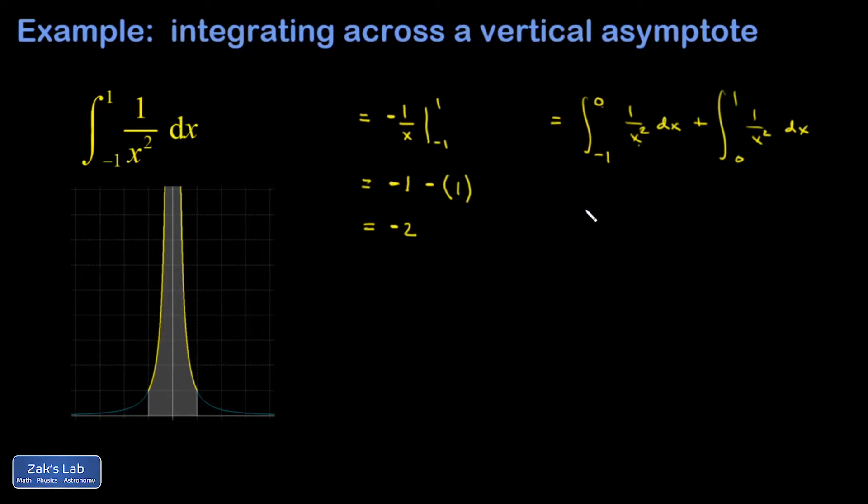The way to be really careful with this is to call that upper limit a t and take the limit as I get close to the problematic point. I have the limit as t goes to 0 from the left, and that's going to be a critical part of this. Integral negative 1 to t, 1 over x squared dx, plus the limit as t goes to 0 from the right, where my x values are positive. Integral from t to 1, 1 over x squared dx.